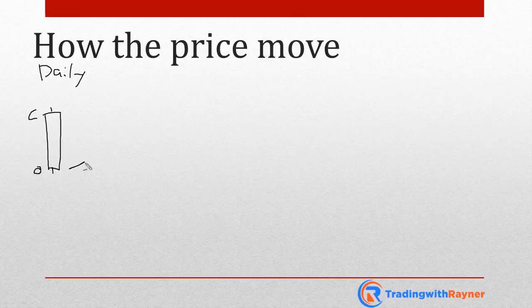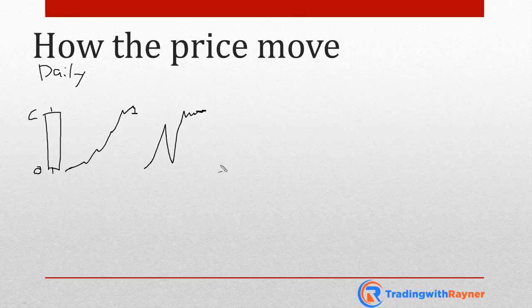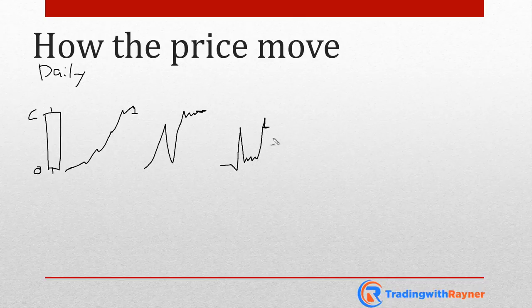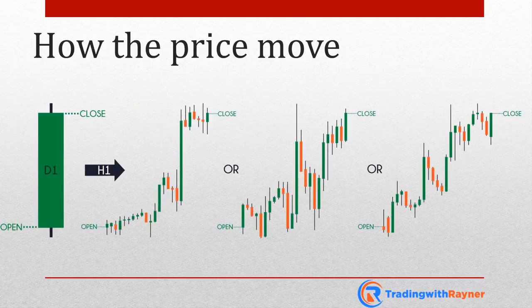The thing about this candlestick is that it doesn't tell you how the price moved within the day. For example, if it opened here, the price could move like this and eventually close here. Maybe the price moved up, down, up, consolidated and closed somewhere here. Or maybe it opened, went down lower, went up, ranged, and then pushed all the way back up and closed somewhere here. I've got a graphical representation showing three different ways that the price could potentially move. Of course, there are more than three ways — countless possibilities.